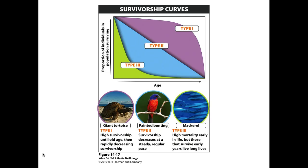With a type three survivorship curve, which is the line above the green shaded section, it is extremely likely that young individuals would die, as you can tell from the sharp negative slope at the beginning of the green line. But should they survive to a medium age, you would expect that they would live for a long time. So there is rapid early mortality, but if they survive that, they'll likely live for a long time. These are the three different types of survivorship curves.